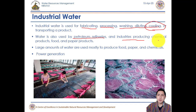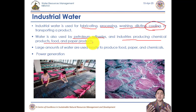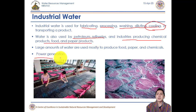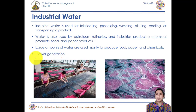Other industries using significant water include chemical product manufacturing, food processing, and paper production — making traditional paper requires water at every step. Power generation in our country is also a major area where large amounts of water are used to generate power.